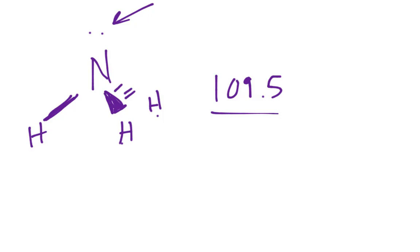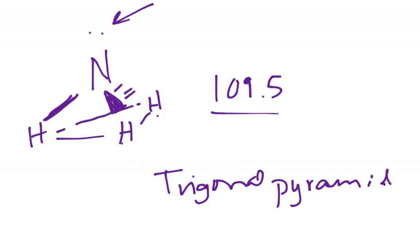And because it has that lone pair, instead of calling it tetrahedral, we're going to call this trigonal pyramidal. Because it makes a pyramid. Here's my, right, I have my base, my base here, and it all goes up into the point. Which is my nitrogen, so I make this little pyramid there.